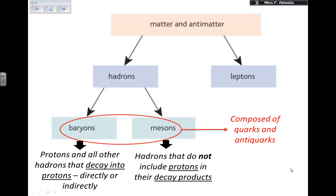Besides being grouped into hadrons and leptons, hadrons can be divided further into baryons or mesons. Baryons are protons and all other hadrons that decay into protons, directly or indirectly — so anything that eventually produces a proton is a baryon. Mesons are hadrons that do not include protons in their decay products — they are heavy and interact through the strong interaction, or electromagnetically if charged, but there is no proton anywhere in their decay chain. Both baryons and mesons are composed of quarks and anti-quarks, which will be covered in another video.